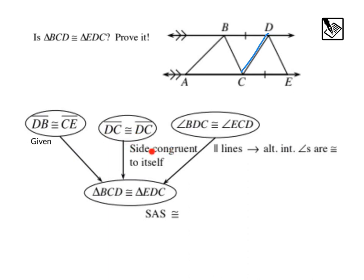This is an interesting one here. We have angle BDC, that's this angle right here. It's congruent to angle ECD, this angle right here. And because these markings are telling us that these two lines are parallel, we know that these are alternate interior angles. And that's why we can say that those angles are congruent because we have parallel lines and these are alternate interior angles that we know are congruent.